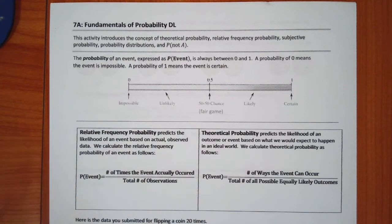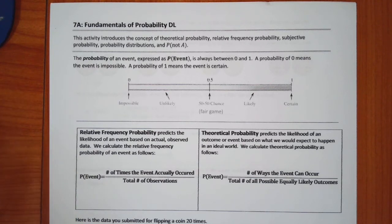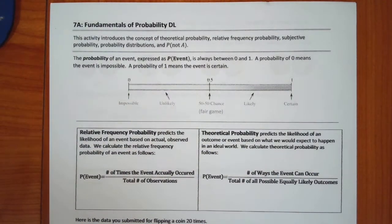We're going to talk about theoretical probability, relative frequency probability, subjective probability, probability distributions, and the probability of an event not happening. So that's quite a lot, and there's a lot to it.